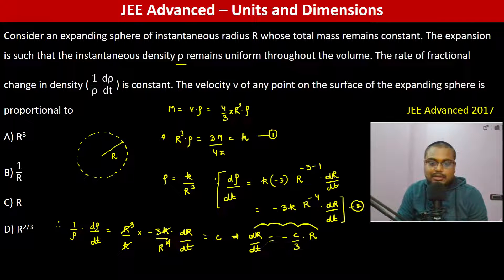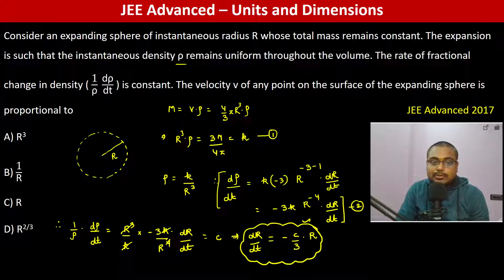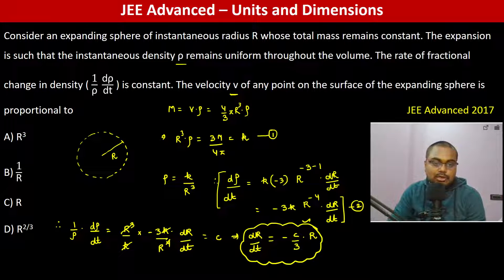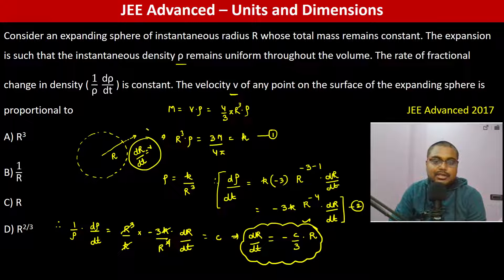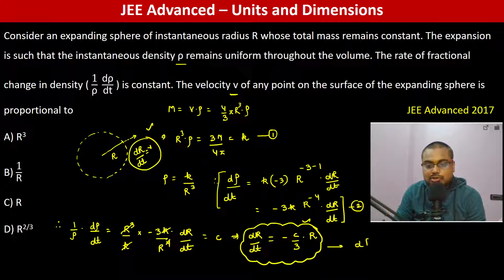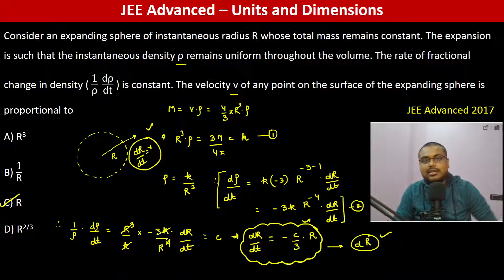So dr/dt we are getting something like this. Now dr/dt is itself the velocity. So this very clearly shows it is proportional to r. Therefore, C is the answer.